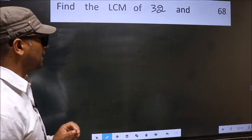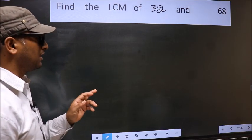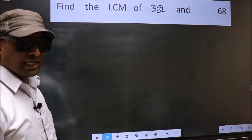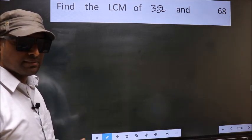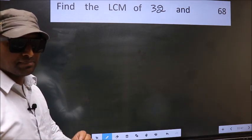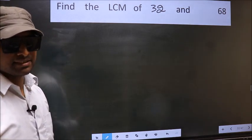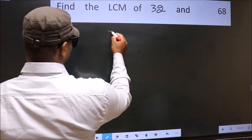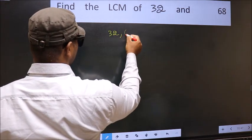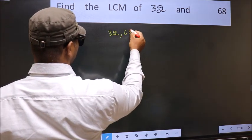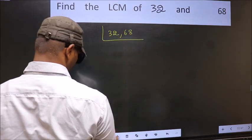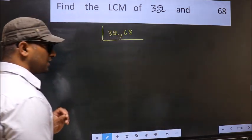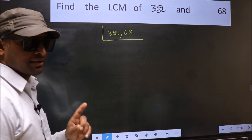Find the LCM of 32 and 68. To find the LCM, first we should frame it in this way: 32, 68. This is your step 1.